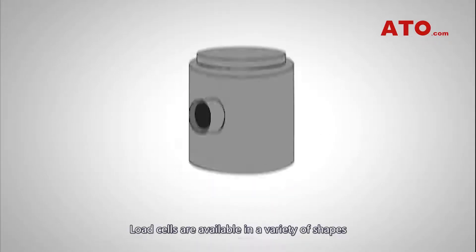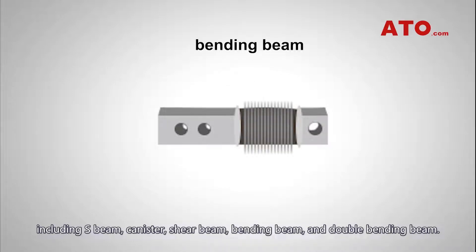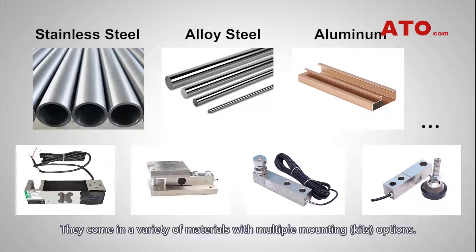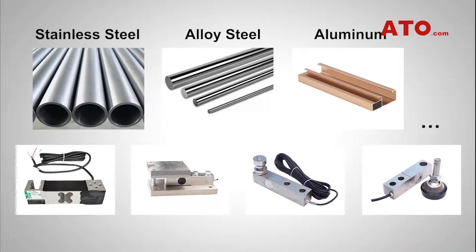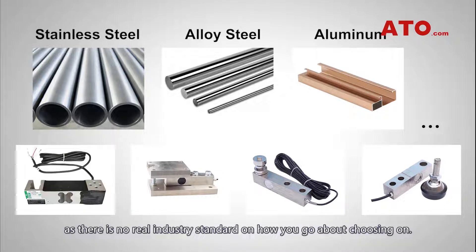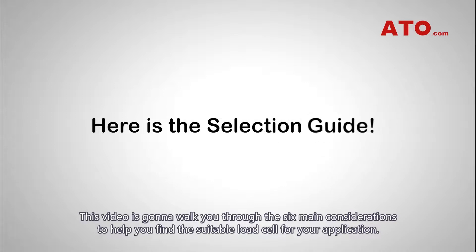Load cells are available in a variety of shapes including S-beam, canister, shear beam, bending beam, and double bending beam. They come in a variety of materials with multiple mounting kit options. With so many choices, we understand that selecting the correct load cell for your application is a challenging task, as there is no real industry standard on how you go about choosing one. But now we are here to help. This video is going to walk you through the 6 main considerations to help you find the suitable load cell for your application.